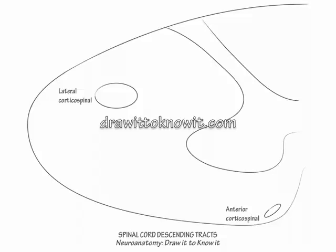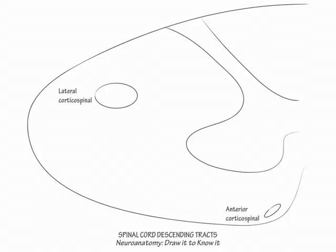The lateral corticospinal tracts are necessary for fine motor movements, but the anterior corticospinal tracts are sufficient for gross motor movements, which helps explain why after cerebral hemispherectomy, contralateral proximal motor movements are preserved from the anterior corticospinal tracts on that side of the body. Amyotrophic lateral sclerosis is an example of a disease that causes degeneration of both the corticospinal tracts and motor neurons of the anterior horn.